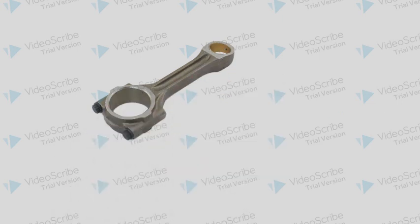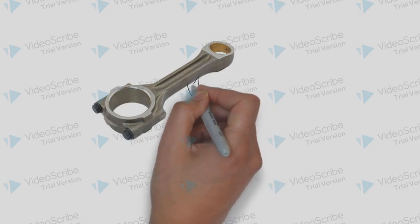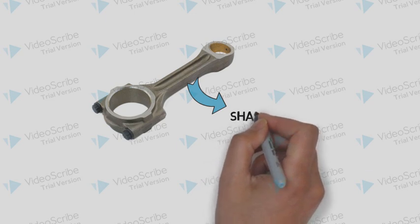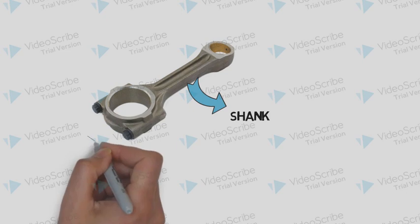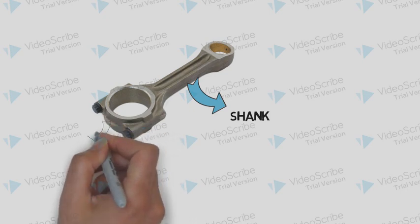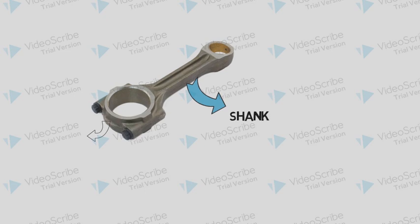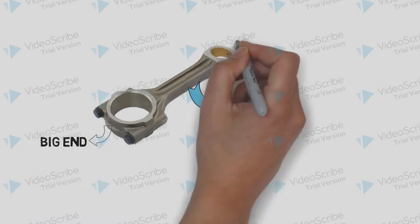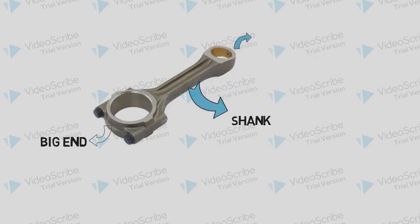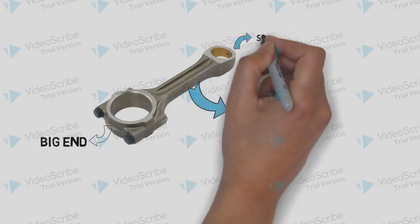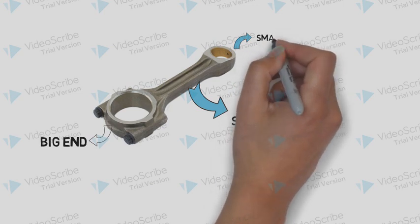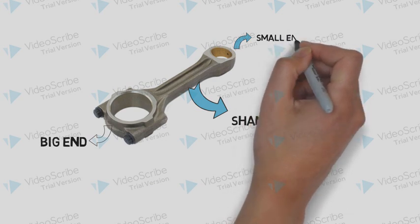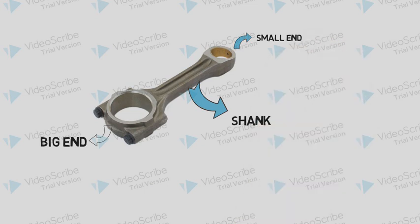Before going into further detail about the design, it is very important to know the different parts of a connecting rod. One important part is the middle section, which is an I-section, and that middle length portion is called the shank of the connecting rod. The top portion shown in the figure is called the big end, and the opposite portion is the small end, which has a smaller diameter.